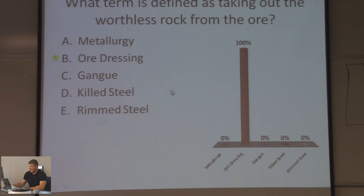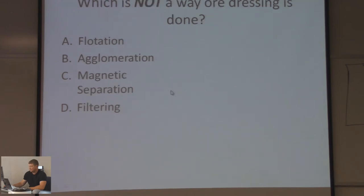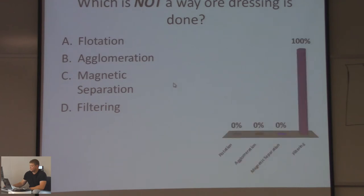Which is not a way ore dressing is done? Flotation, agglomeration, magnetic separation, or filtering? Filtering is not a way. It is done through flotation, agglomeration, and magnetic separation — that's how ore dressing is done.